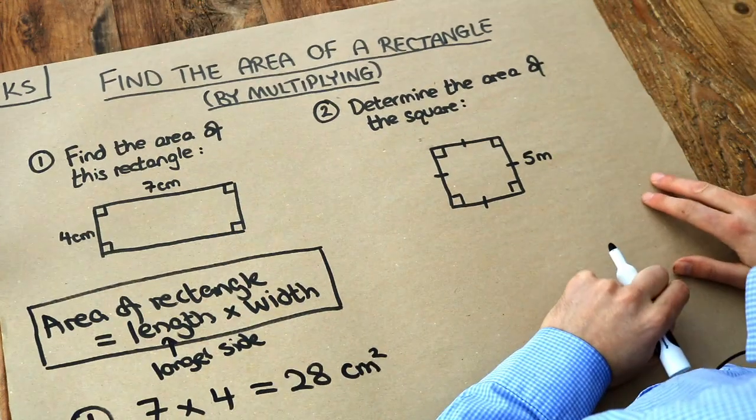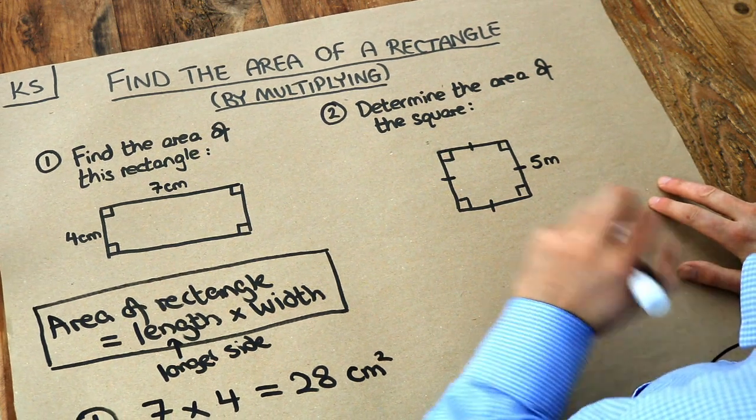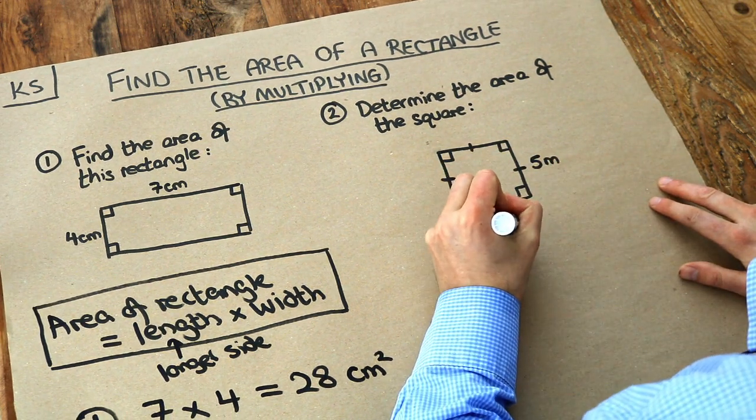What about this one? We've got a square. Now remember that all the sides of a square are the same length. So that's 5 metres that would also be 5 metres.